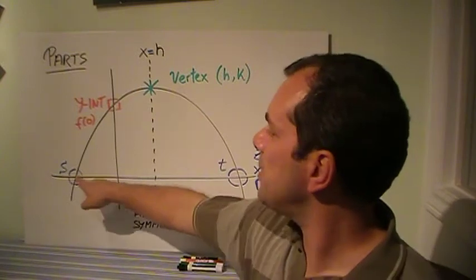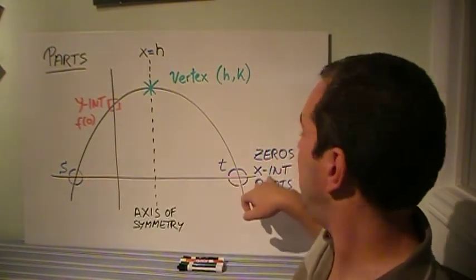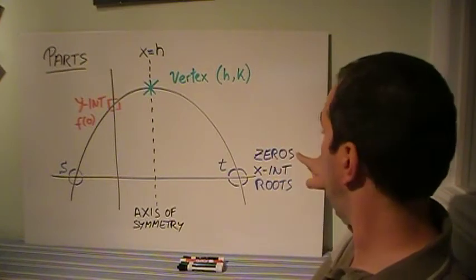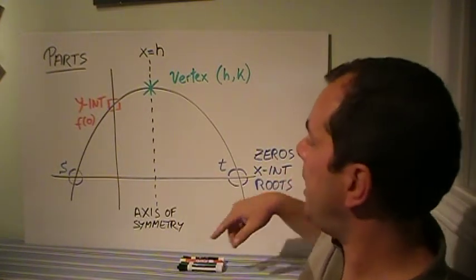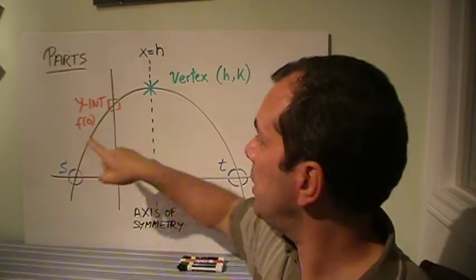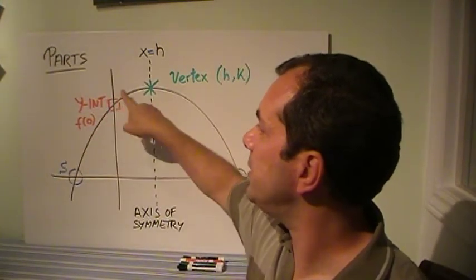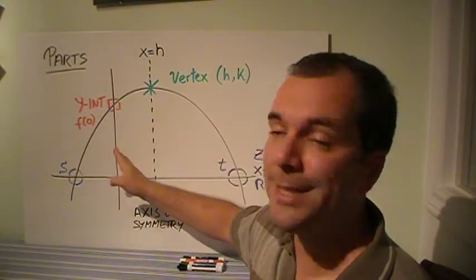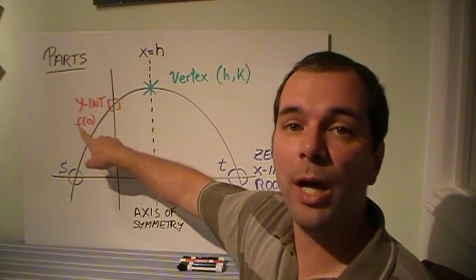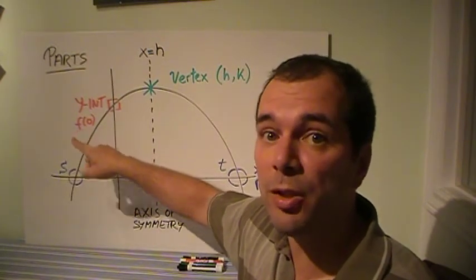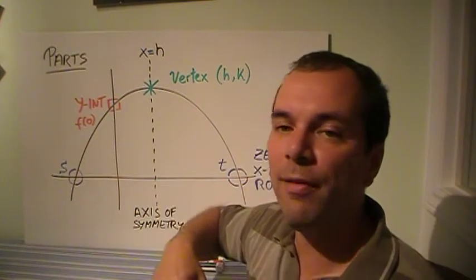The parabola also has places where it cuts the x-axis, and those are the x-intercepts, but we also call them zeros and we call them roots. And lastly, we have the y-intercept, where the parabola crosses the y-axis. I have f of zero, because that's how you find the y-intercept for anything — you set x equal to zero and you figure out your y-value.